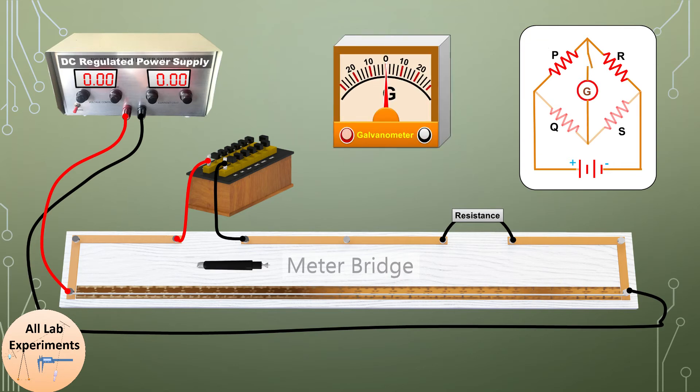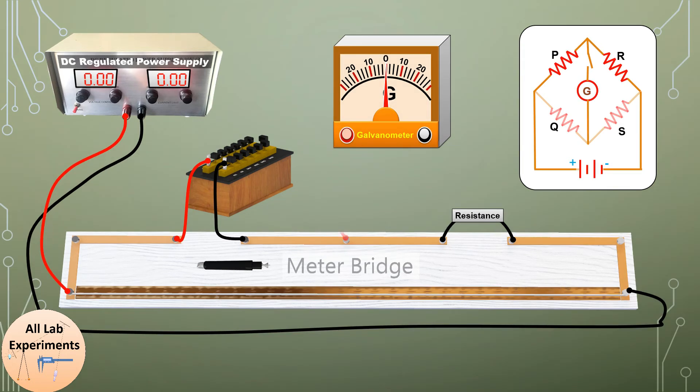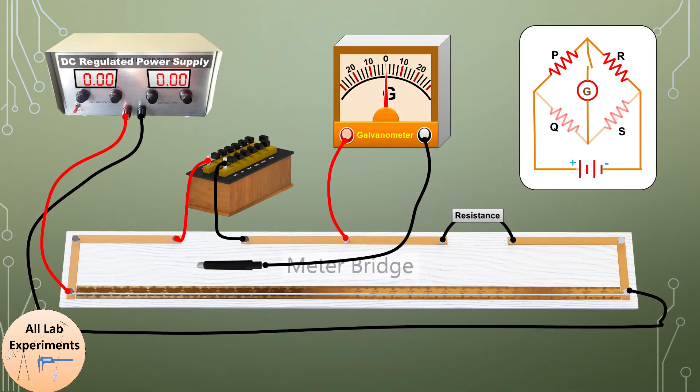Now in the next step we will take this galvanometer and connect its one end to the middle of the copper strip and the other end of the galvanometer with the jockey. Now switch on the power supply and set it to 5 volts.